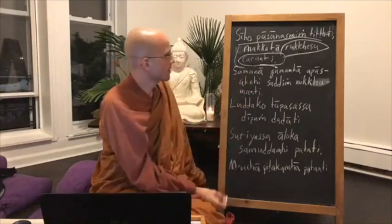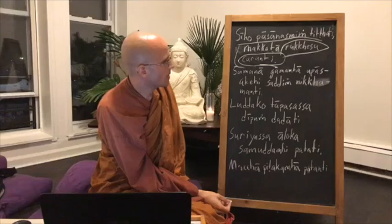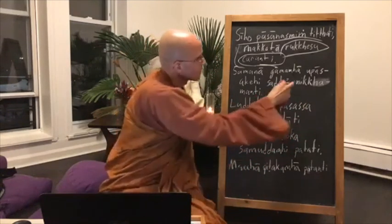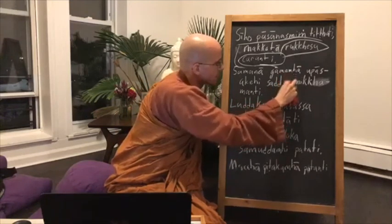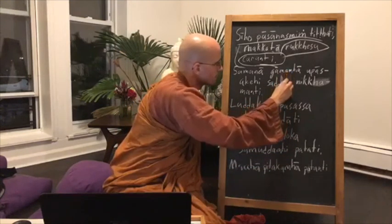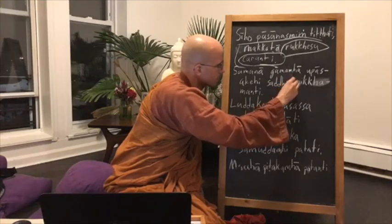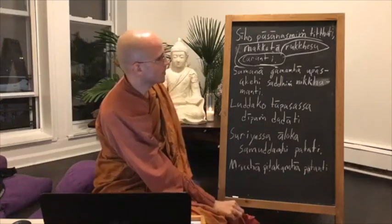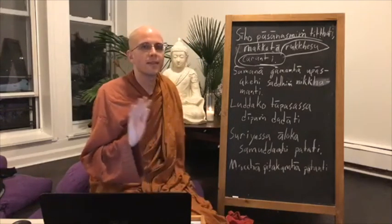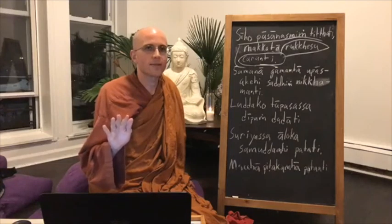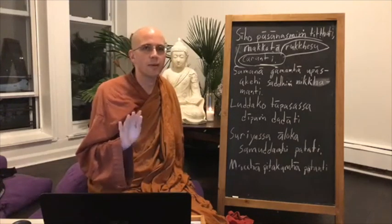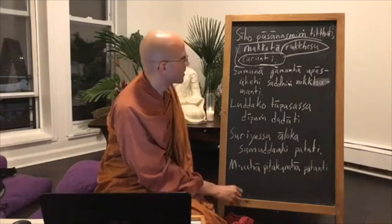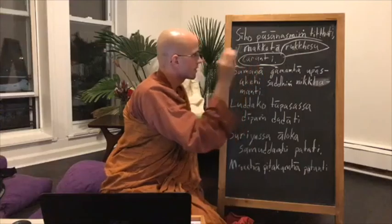Next sentence: Samana Gamamha Upasakehi Sadhing Nikkhamanti. Samana — contemplatives — is nominative plural. Gamamha — village — with the Amha ending is ablative singular: 'from the village.' Upasakehi — lay devotees — with the Ehi ending is instrumental plural, meaning 'with the lay disciples.' Sadhing means 'with,' clarifying it's instrumental. Nikkhamanti is third-person plural present: 'they depart' or 'they set out.'